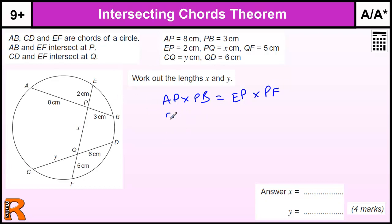So we know AP is 8, PB is 3, EP is 2, and PF, well we've got x for this bit and then 5 for that bit, so we've got x plus 5. And I'm going to put that in a bracket. So we've got 24 equals 2 times x plus 5.